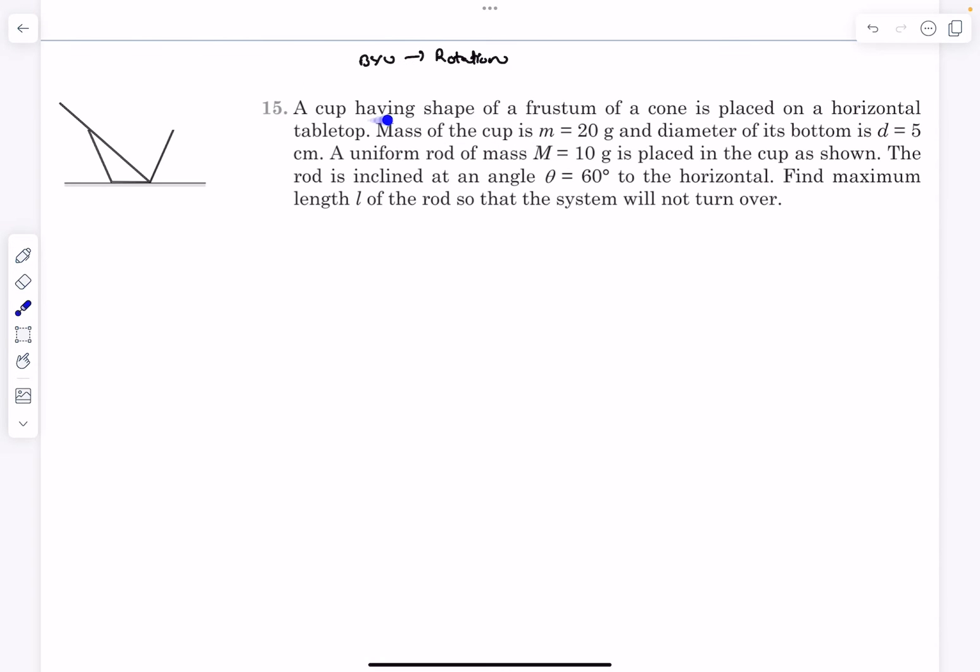In the question, we have a cup having the shape of a frustum of a cone that is placed on a horizontal tabletop. The mass of the cup is small m and the diameter of its bottom is 5 centimeters. A uniform rod of mass capital M is placed in the cup as shown in the figure. The rod is inclined at an angle of 60 degrees to the horizontal. We have to find the maximum length L of the rod so that the system will not turn over.